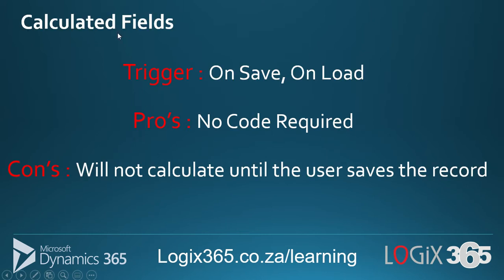Let's first discuss calculated fields. Calculated fields have a trigger — meaning when do they actually execute the calculation. For example, if I have a form with two fields, field A and field B, and I fill in a number in each and want to populate a result in a calculated field, it will not calculate immediately. It will only calculate on save or on load — on save meaning when the user clicks save, and on load meaning when the form actually loads.